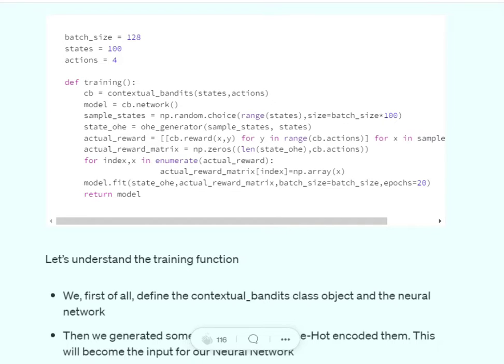Then we will be generating the sample states. These are random samples we're trying to generate for training purposes. It is nothing but we are making a random choice between 0 to 100, the total number of states we have got. Then over the sample states, I am generating the one-hot encoding for the sample state we have got.